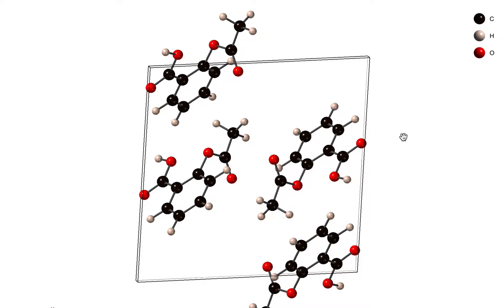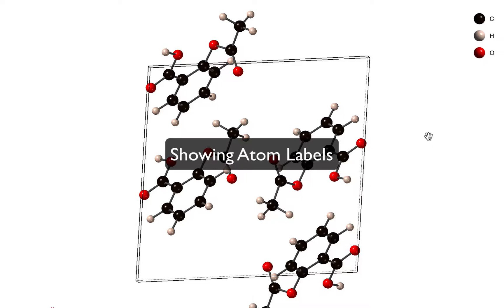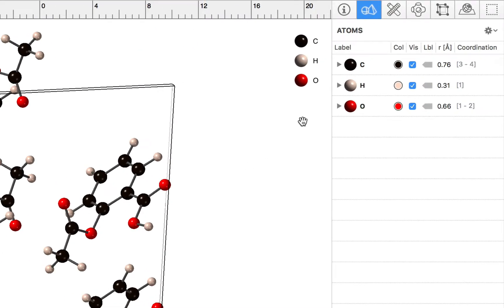Now the next thing we're probably going to want to do is start measuring this molecular crystal, and something that's quite useful is to display labels for the individual atoms. We can toggle labels on or off by element using the atoms inspector.